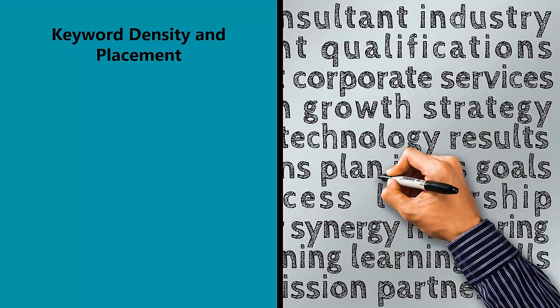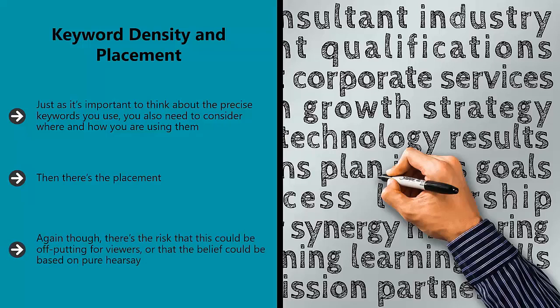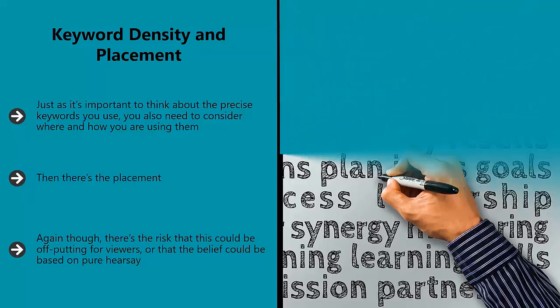Keyword density and placement. Just as it's important to think about the precise keywords you use, you also need to consider where and how you are using them. Optimal keyword density is a fraught subject matter, with some creators saying that 1% is more than enough and others recommending you go much more heavy-handed with 3%. Then there's the placement — popular opinion tells us that keywords placed in the opening and closing paragraphs of articles, or in the H2 headers, are more likely to gain the attention of Google. Again though, there's the risk that this could be off-putting for viewers or that the belief could be based on pure hearsay, so test it for yourself.